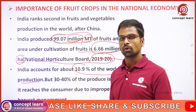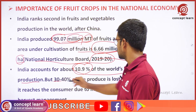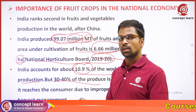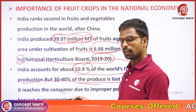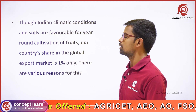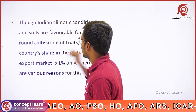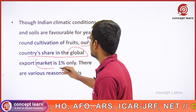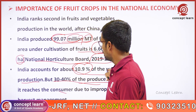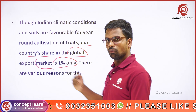India's share in world fruit production is 10.9%. However, 30-40% of the produce is lost before it reaches the consumer, because fruits are highly perishable in nature, due to improper post-harvest management. Our Indian climatic conditions and soils are favorable for year-round cultivation of fruits, yet our country's share in the global export market is only 1%, despite a production level of 10.9%. There are various reasons for this, which we will discuss later.